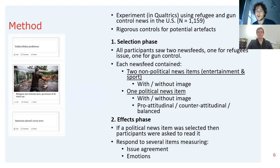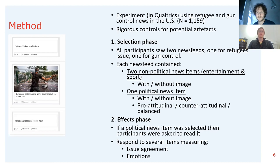Now Tom is going to talk about the methods we used and the results found in our study. Our method involved an experiment built in Qualtrics, fielded in the U.S., using two contexts: news about refugees and news about gun control — two subjects that are highly polarized with strong issue publics, so we would expect to see selective exposure toward prior views. We took care to have rigorous controls to control for potential artifacts, including pre-testing the images and text we used to make sure they conveyed the appropriate bias we wanted.